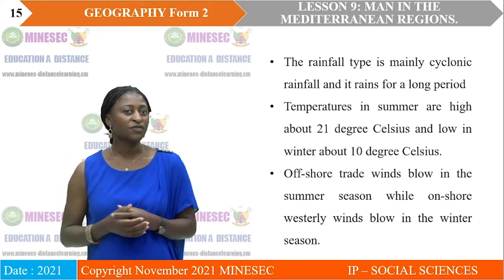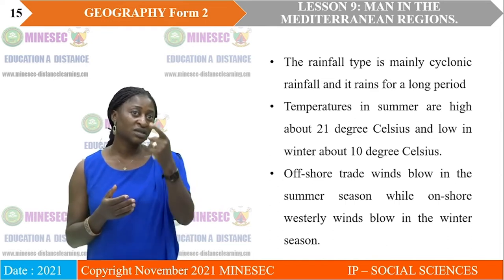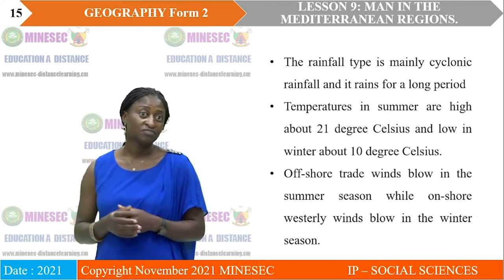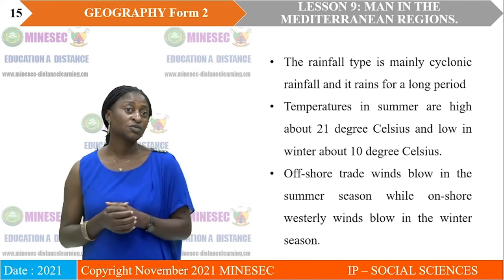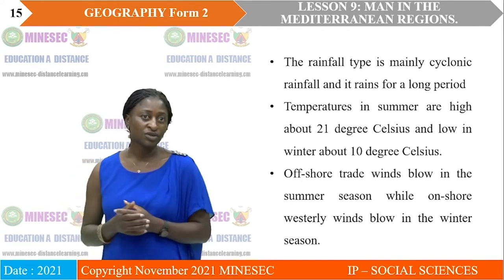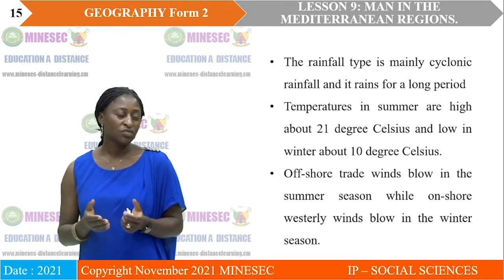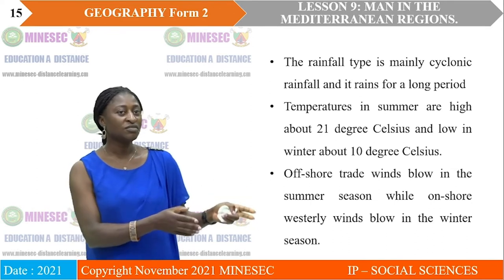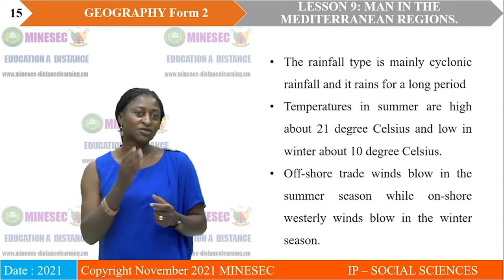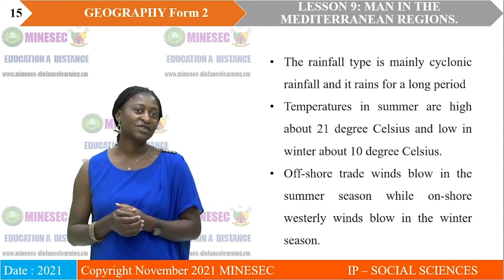Let's look at the type of air masses that flow in this area. It is with the help of these air masses that we have cyclonic rainfall — the meeting of two air masses with different characteristics, the warm and the cold air mass. We have offshore winds that blow during the summer season. Offshore means these air masses blow from the coast or from the land to the water body, so this type of air mass is very dry and brings little or no rainfall.